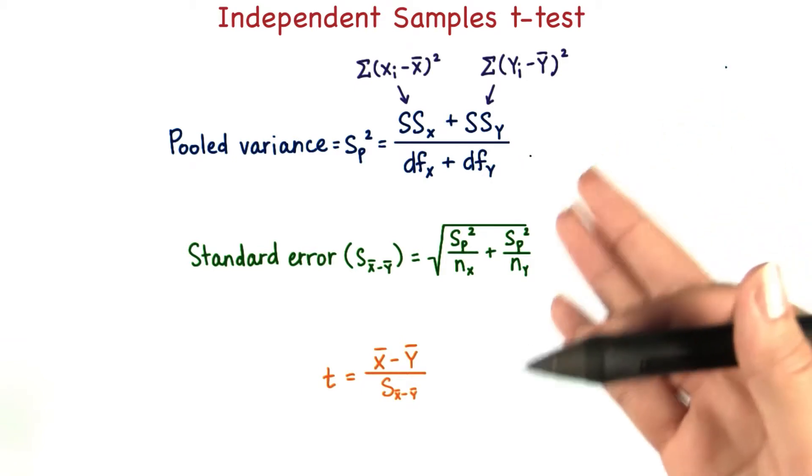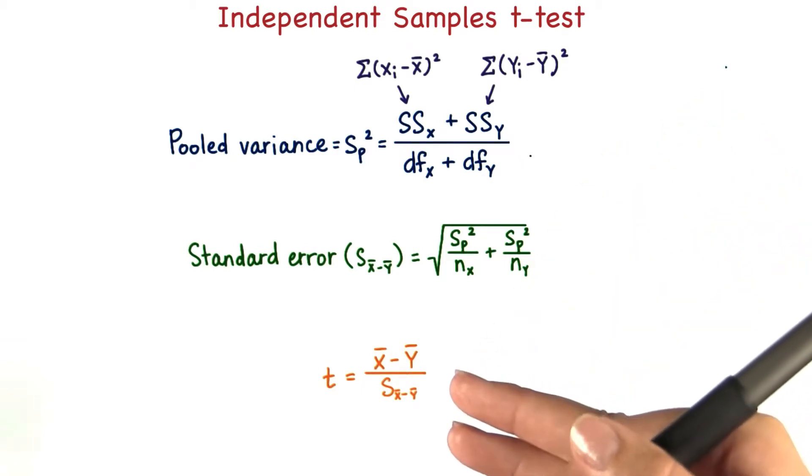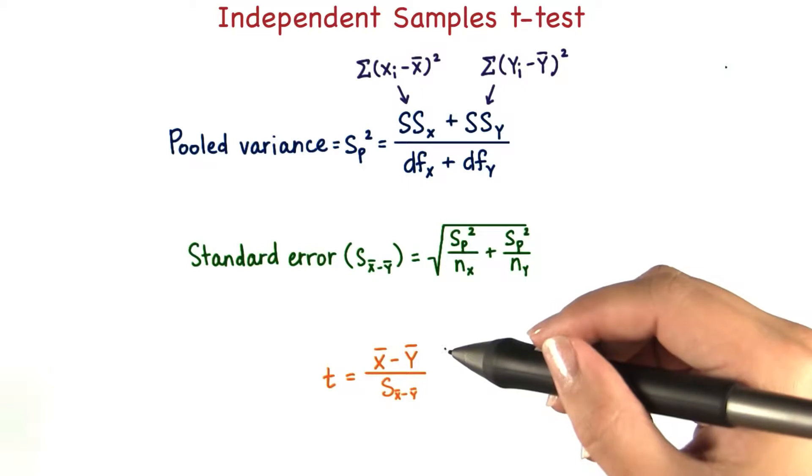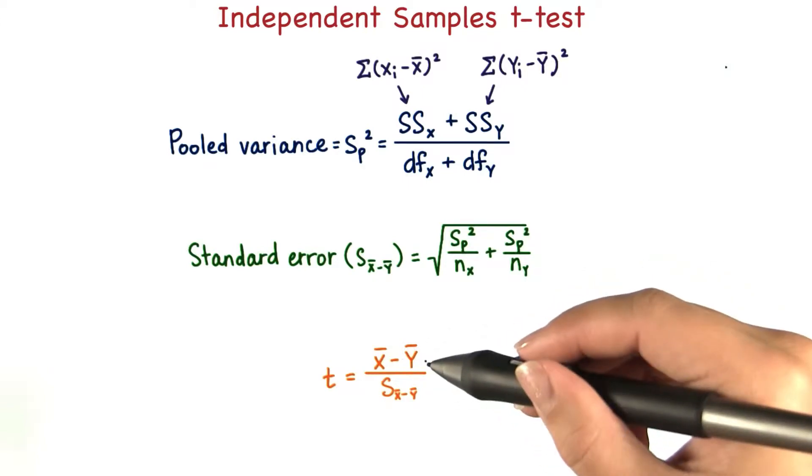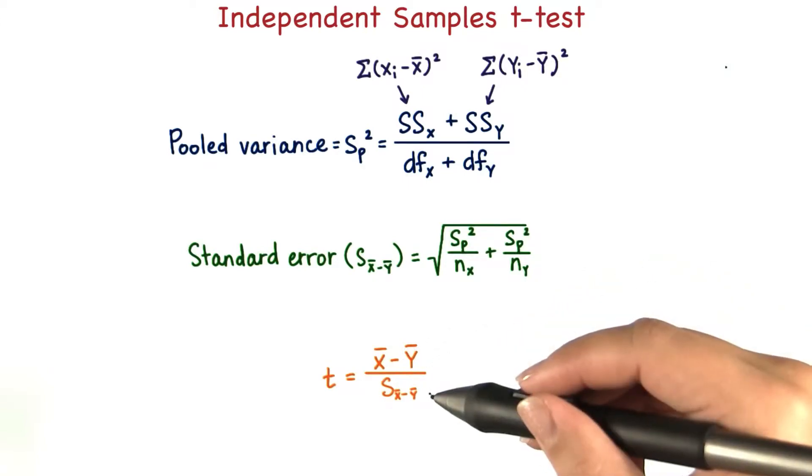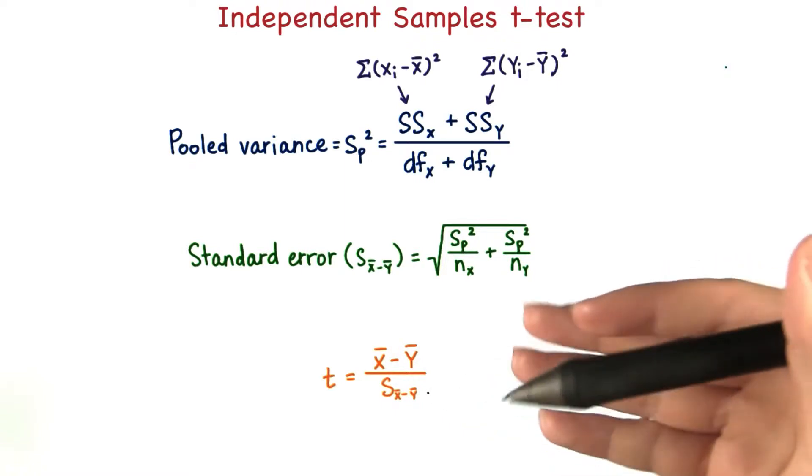But the way the t statistic is calculated is essentially the same. We divide the observed difference between the mean of x and the mean of y by the standard error, which is calculated slightly differently.